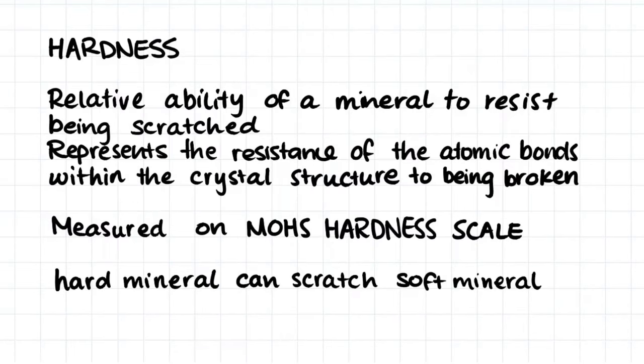The next property we would use to classify minerals is mineral hardness. Hardness means the relative ability of the mineral to resist being scratched. It actually represents the resistance of the atomic bonds within the crystal structure and their resistance to being broken. The hardness of a mineral is measured on Mohs hardness scale, and we say that a hard mineral can scratch a more soft mineral, which is pretty obvious.